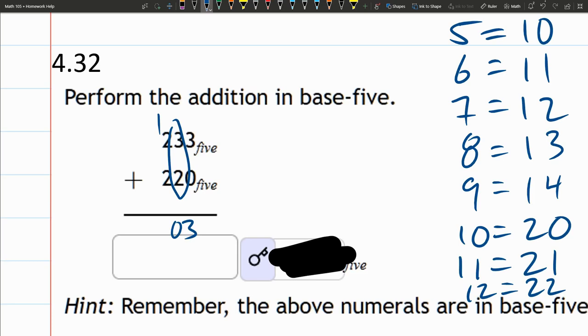And now 2 plus 2 is 4, plus the carried 1 is 5, and again you write that as 1 0. So this will be 1 0 0 3 in base-5.